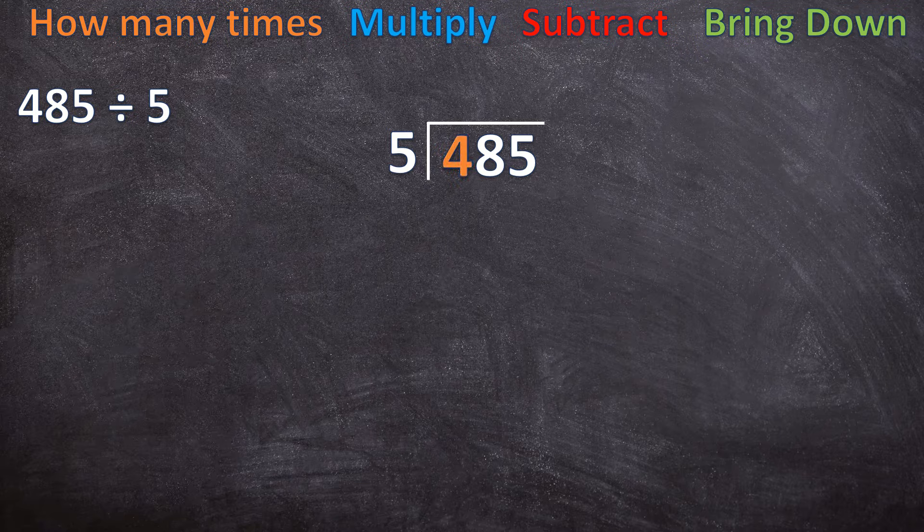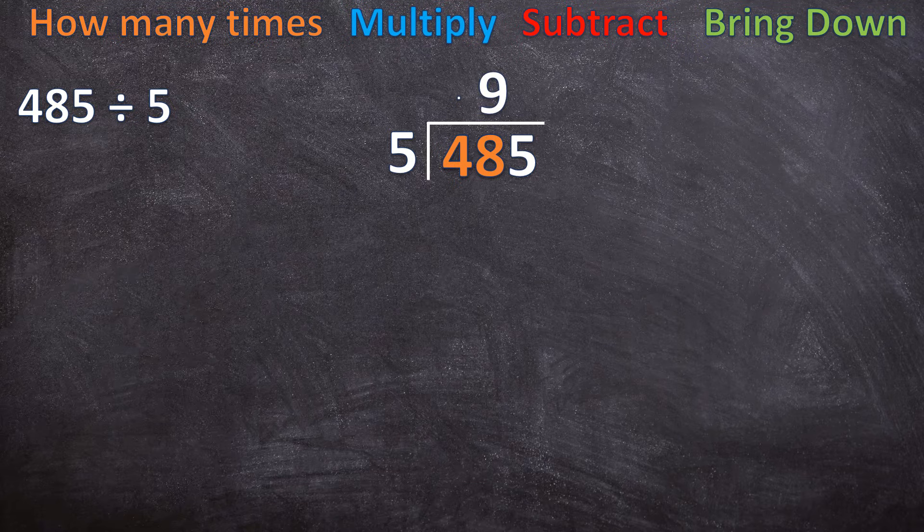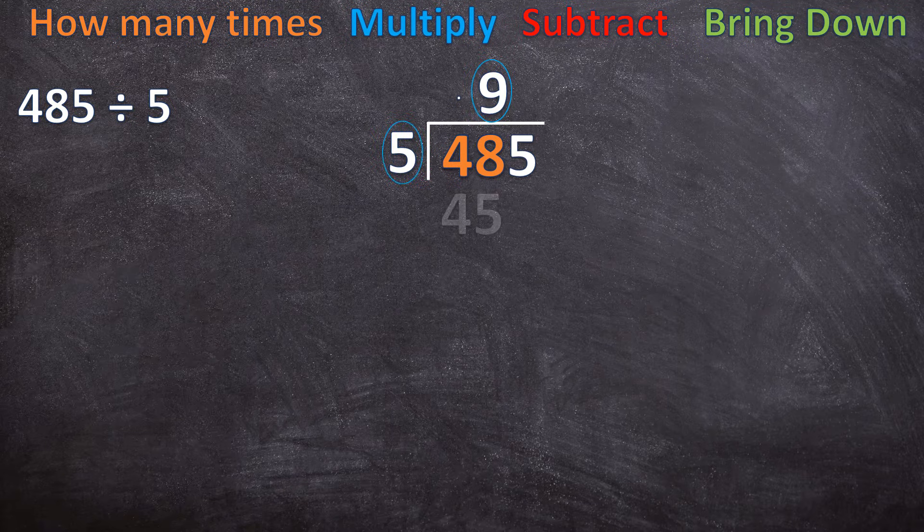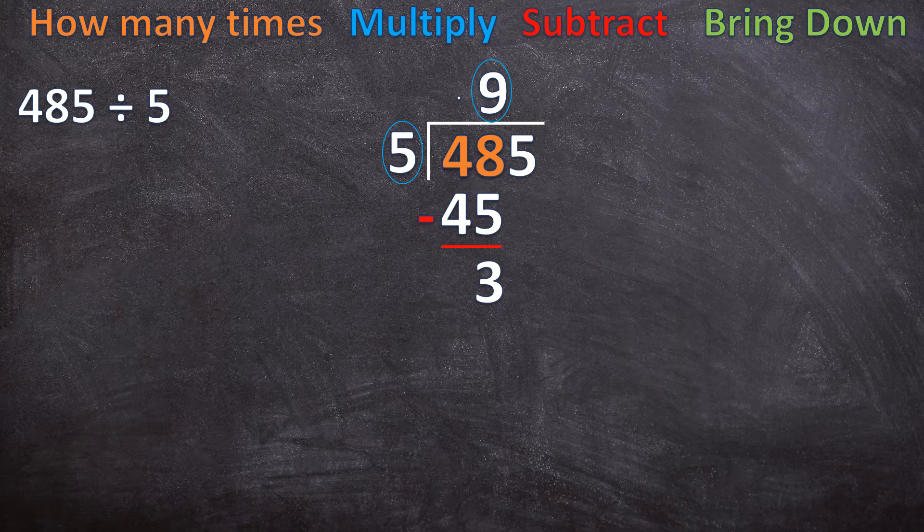So now we start again from left to right. We say, can five go into four? No, five cannot go into four. So just to visualize that for myself, to remember, I'm just adding a dot there so that I know, okay, no, five cannot go into four. So I'm leaving the space above the four open. There must be nothing. Now I move on to the next one. I now say, can five go into 48? Yes. Five can go into 48. How many times? Nine times. And now I multiply, nine times five is 45. Then I follow my steps. Then I subtract. 48 minus 45 is three, and then I bring down the five.